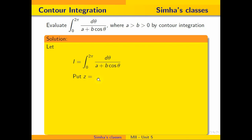I am taking z equal to e to the power iθ. Then, differentiation of this gives dz equal to e to the power iθ into i dθ. From this, I am going to find the value of dθ: dθ equals dz divided by i·e^(iθ).